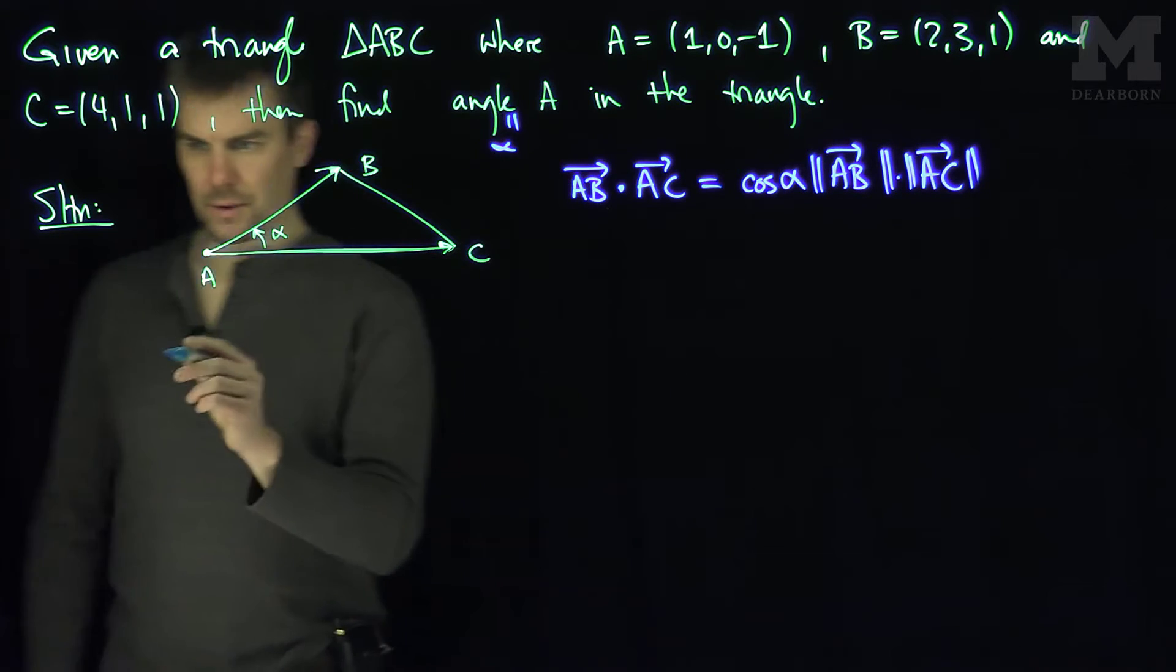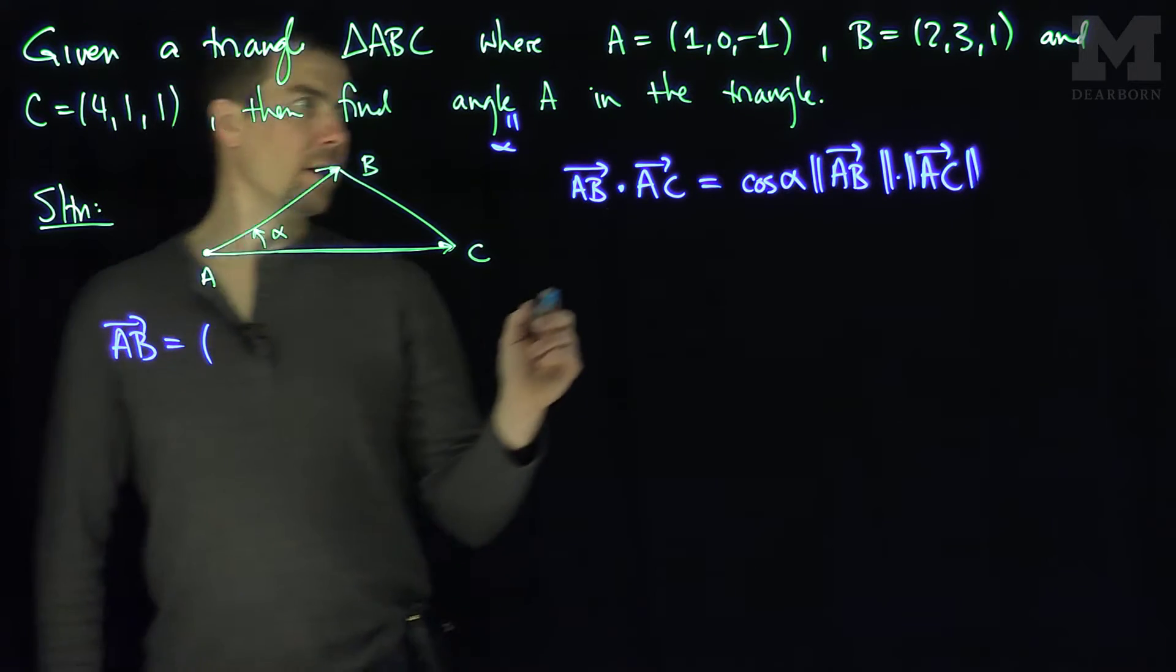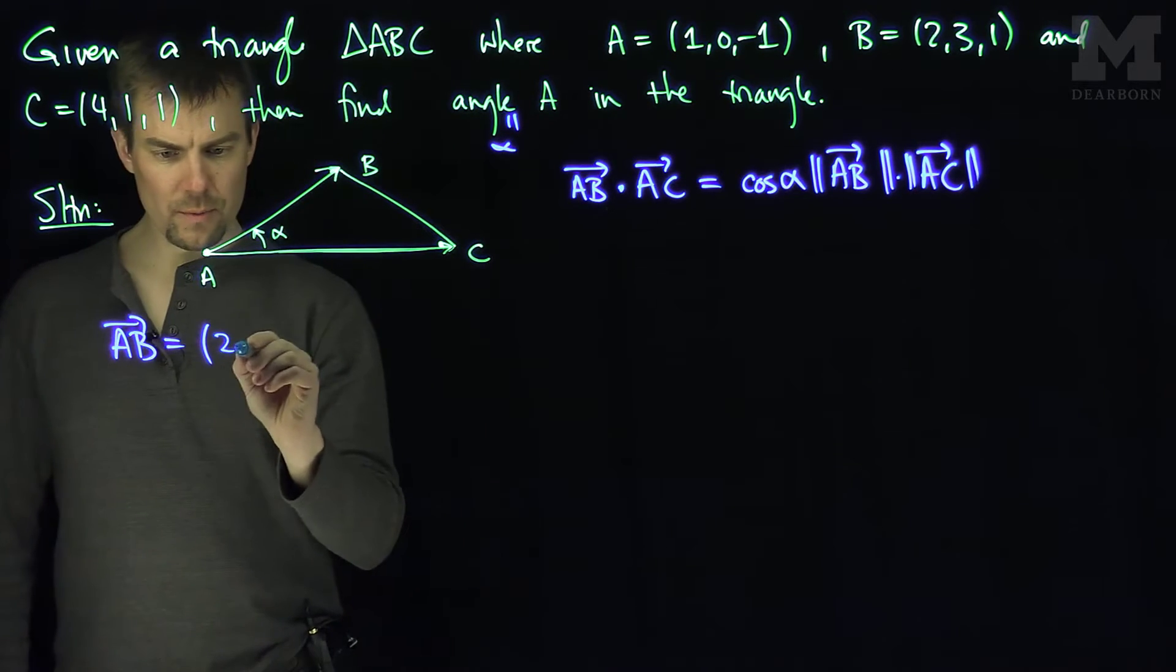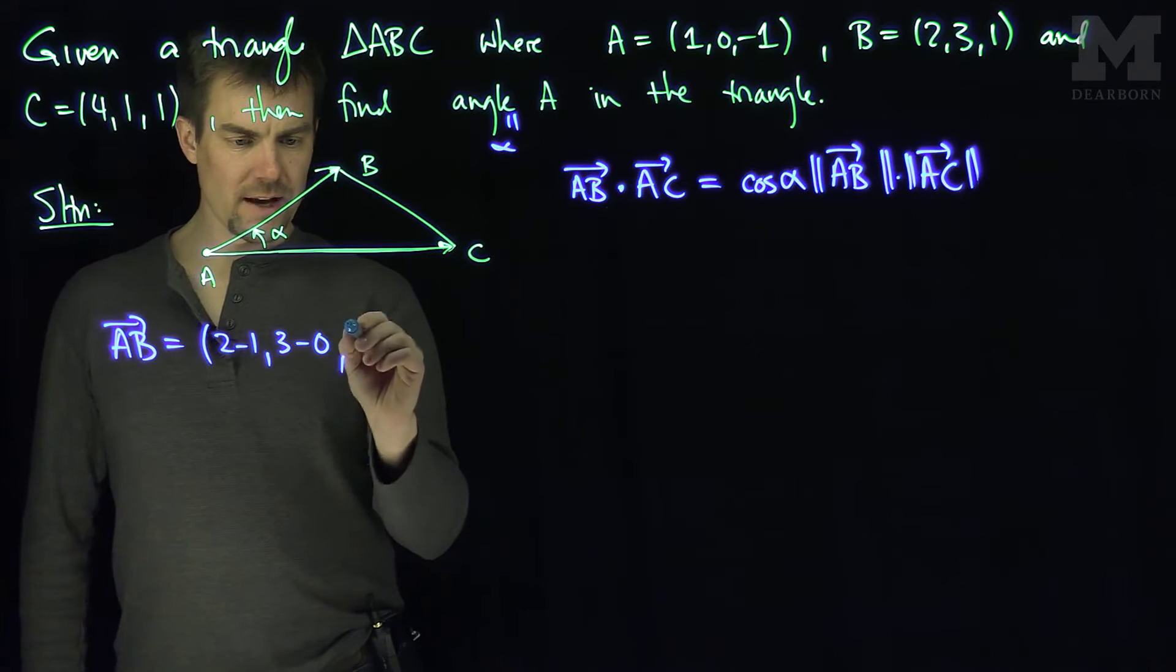So what is AB? So let's compute this. AB is going to be 2 minus 1, and then 3 minus 0, and then 1 minus negative 1.